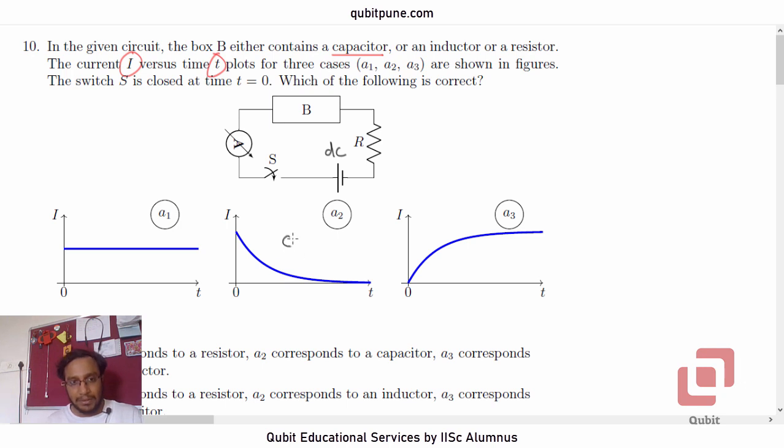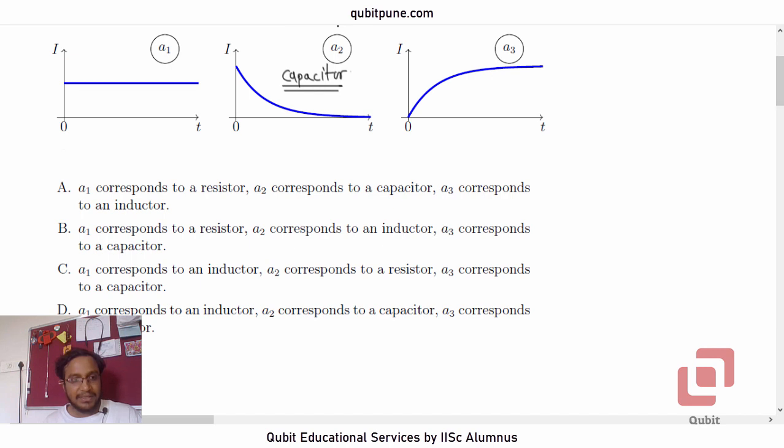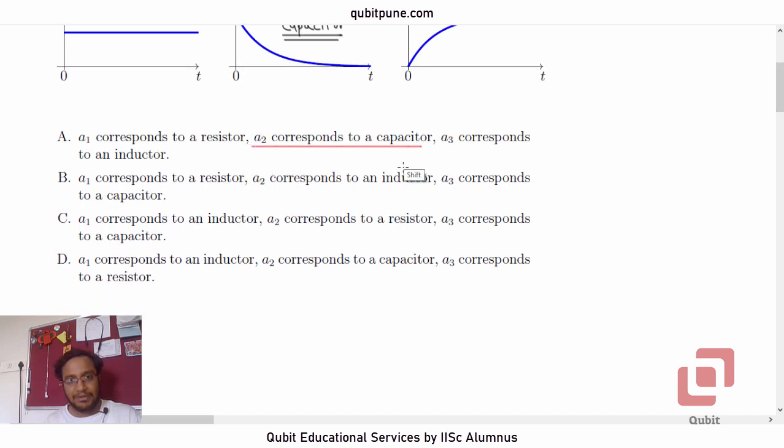So A2 will be corresponding to the capacitor. A2 corresponds to a capacitor. So, it is either option A or option D.